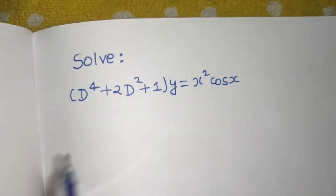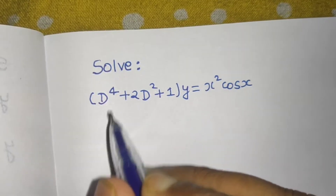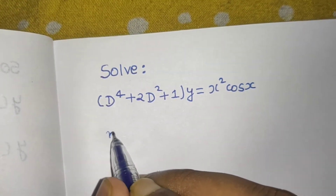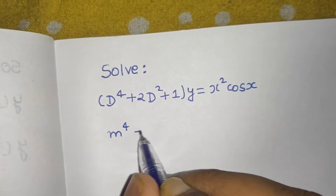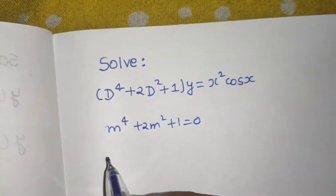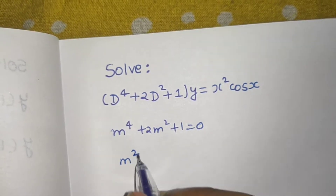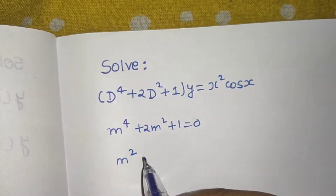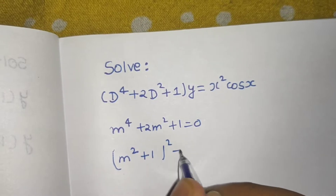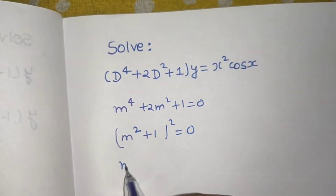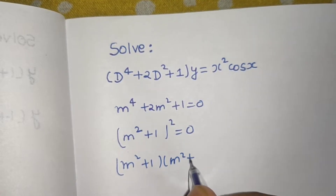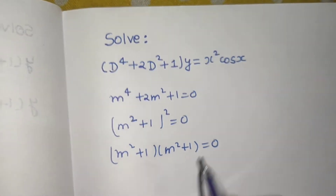First, we'll move ahead with the complementary function. Replace d by m to get the auxiliary equation: m⁴ + 2m² + 1 = 0. This factors as (m² + 1)² = 0, which can be written as (m² + 1)(m² + 1) = 0.